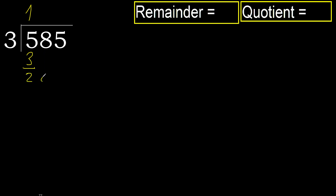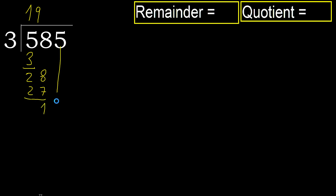Next: 28. 3 multiplied by 9 is 27, which is not greater than 28. 28 minus 27 is 1.